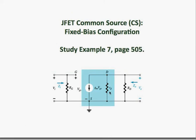For your own revision, please study example 7, page 505 of the textbook — it is an example of a JFET common source with fixed bias configuration.